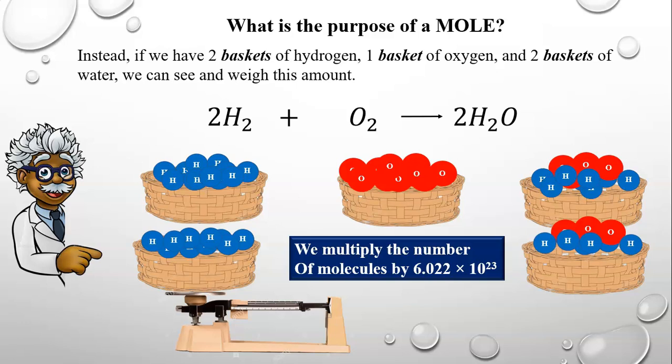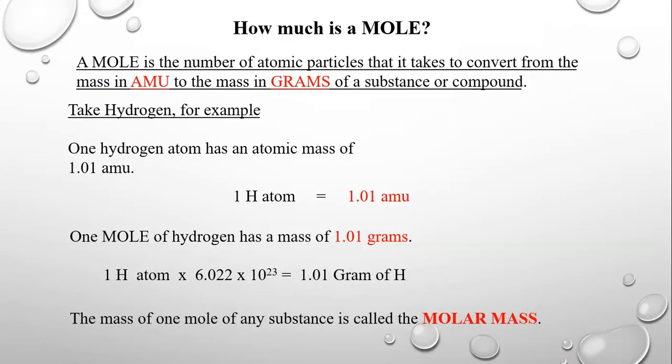That explains why we want to work with a really big number, so we have enough atoms and molecules to actually be able to see and weigh them. But it still doesn't answer the question of why they picked that particular number — 6.022 times 10 to the 23rd. A mole is the number of atomic particles it takes to convert from the mass in atomic mass units to mass in grams of a substance or compound.